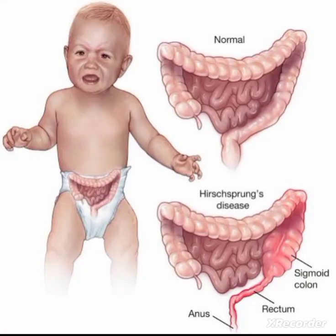Hirschsprung's disease, or congenital ganglionic megacolon, is observed in neonates. It is the congenital absence of parasympathetic ganglion nerve cells from within the muscle wall of the intestinal tract, usually at the distal end of the colon. As seen in this picture, the distal end of the colon is distended. The colon is distended and peristalsis does not function, leading to blockage of fecal matter.